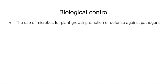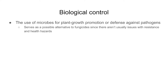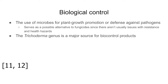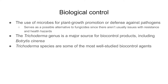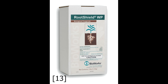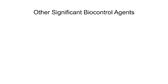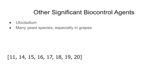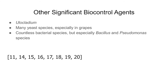Biological control — using microorganisms as antifungal agents — has become more of a possibility, especially as an alternative to fungicides. The Trichoderma genus is well-known as biocontrol agents against many fungal pathogens, including Botrytis cinerea, and is among the most studied biocontrol agents. Other biocontrol agents include Gliocladium, various yeasts especially in grapes, bacteria including Bacillus and Pseudomonas species, Gliocladium species, Clonostachys rosea, and many more.